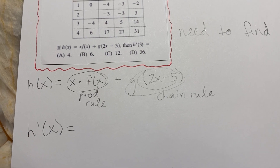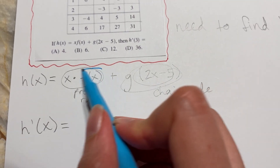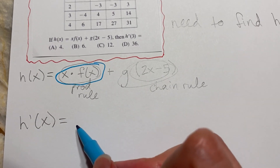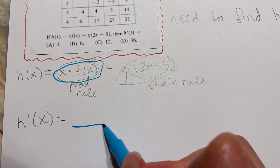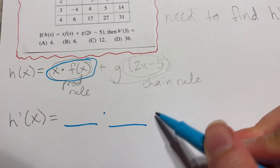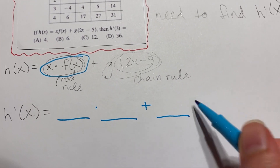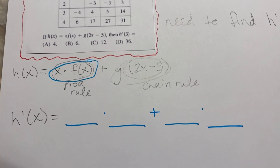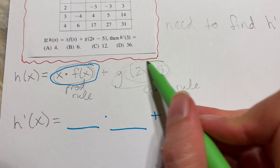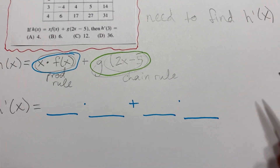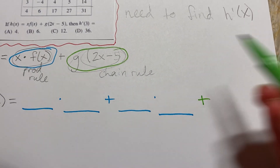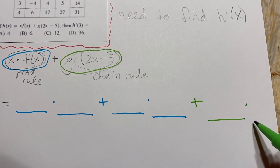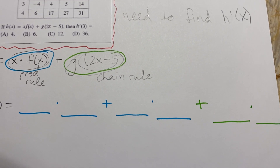For the first part, which I'll circle in blue, I like to write the template for the product rule: blank times blank plus blank times blank. Then we're going to deal with the second piece, circled in green, using the chain rule — we add the derivative of that chain rule piece, which will be one piece times another piece.